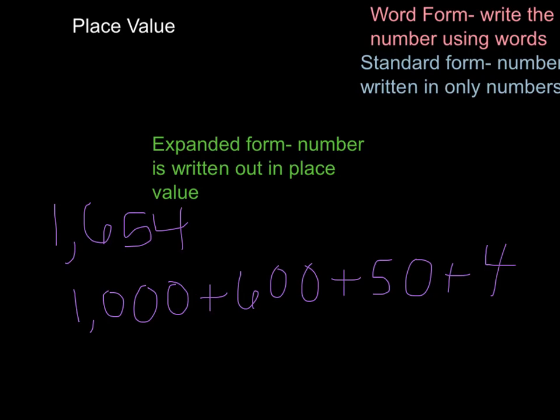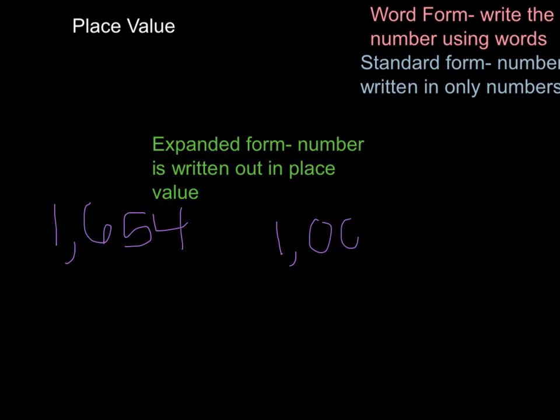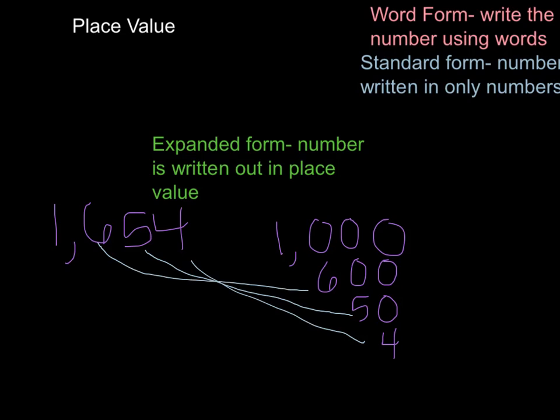Another thing that I taught my students also is you could write it out right on top of each other. And it kind of helps you see that your place value is lining up. 1,654. So my 4 is in my 1's place, and it lines up. My 5 is in the 10's place, and 5 tens is 50. My 6 is in the 100's place, which is 600. And my 1 is in my 1,000's place, so it stands for 1,000.